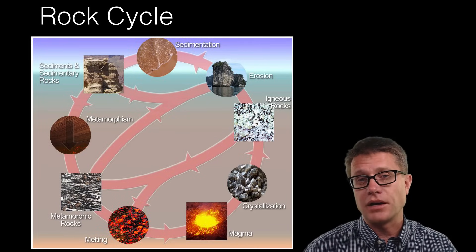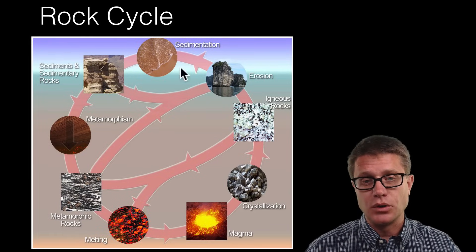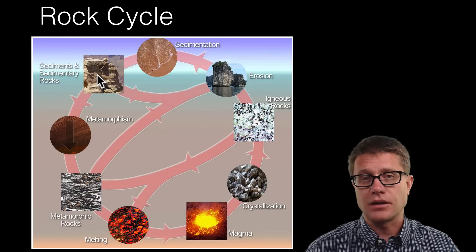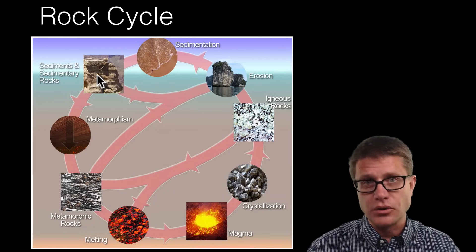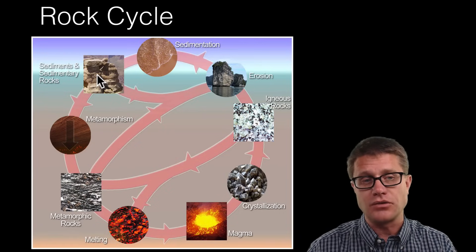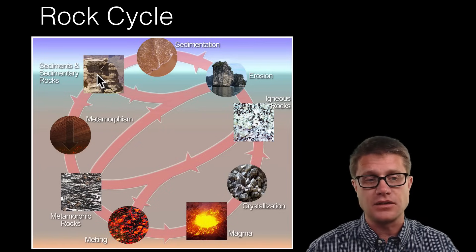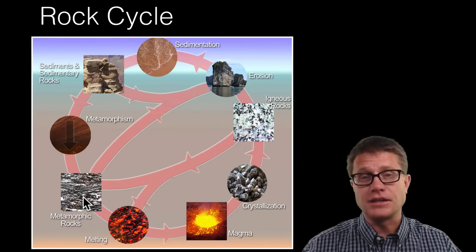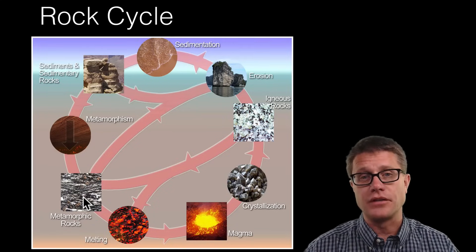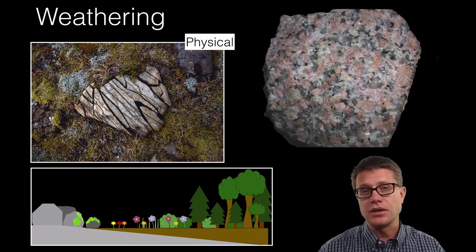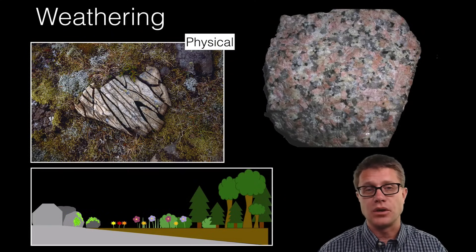On our planet we have a rock cycle where we can move from igneous rock, which are crystallized magma, to sedimentary rocks. We have weathering, erosion moves it, and then we have compaction to form sedimentary rocks like sandstone. And then we can have metamorphism where we are putting heat and pressure on that rock to convert it into a metamorphic rock. But it is weathering that contributes to our soils.